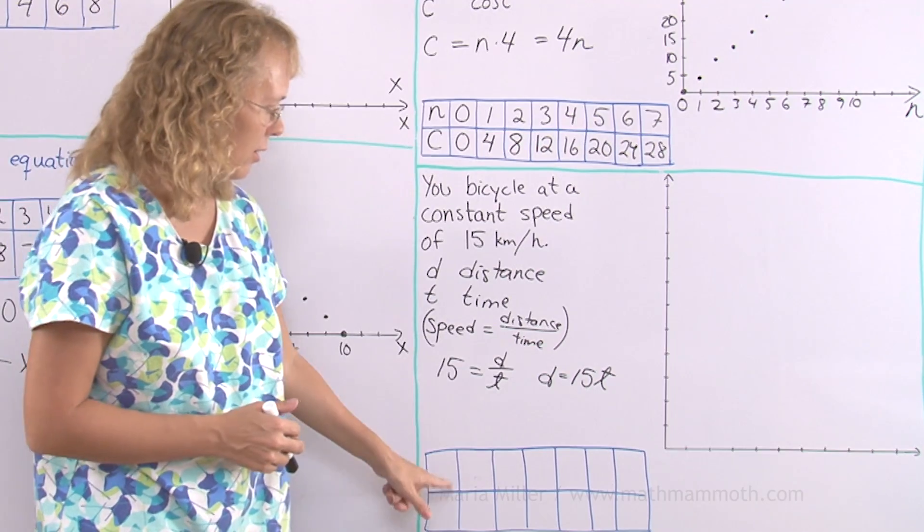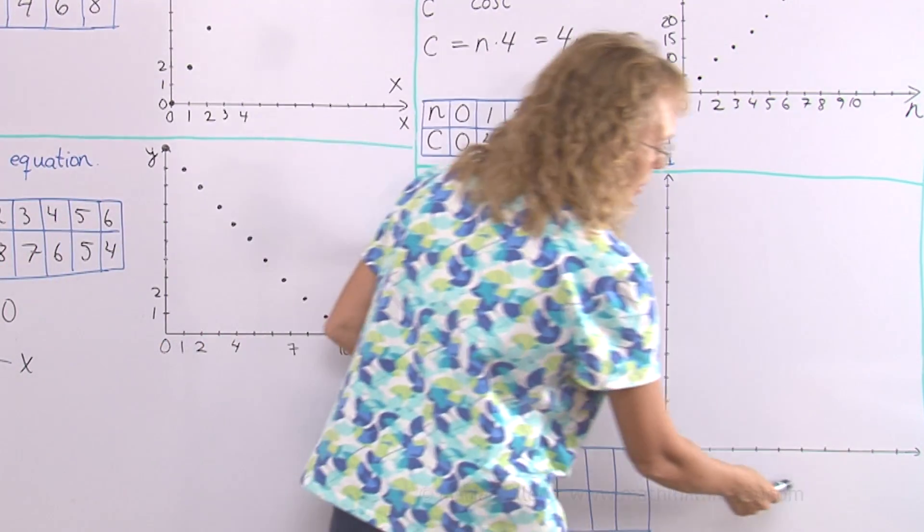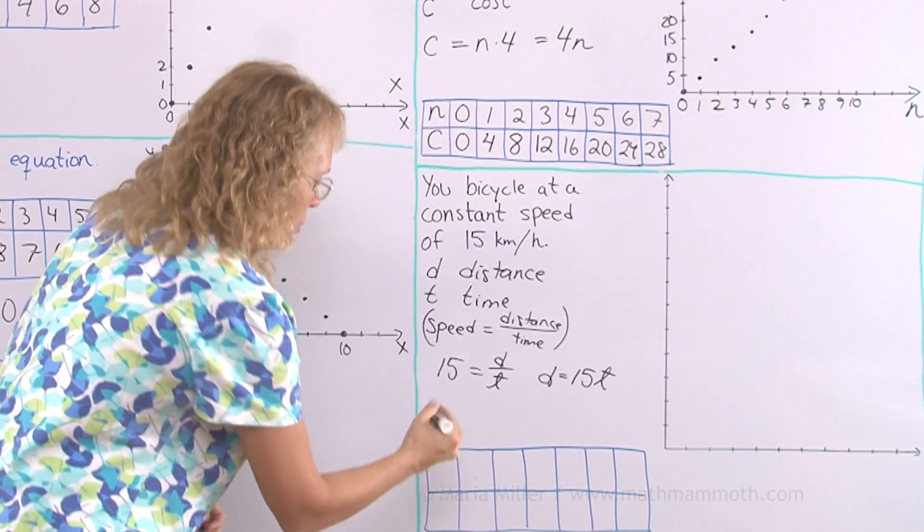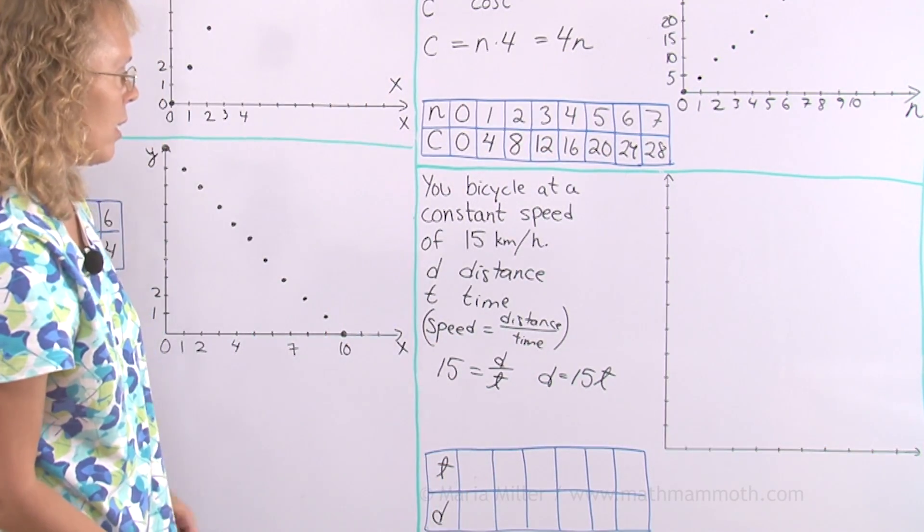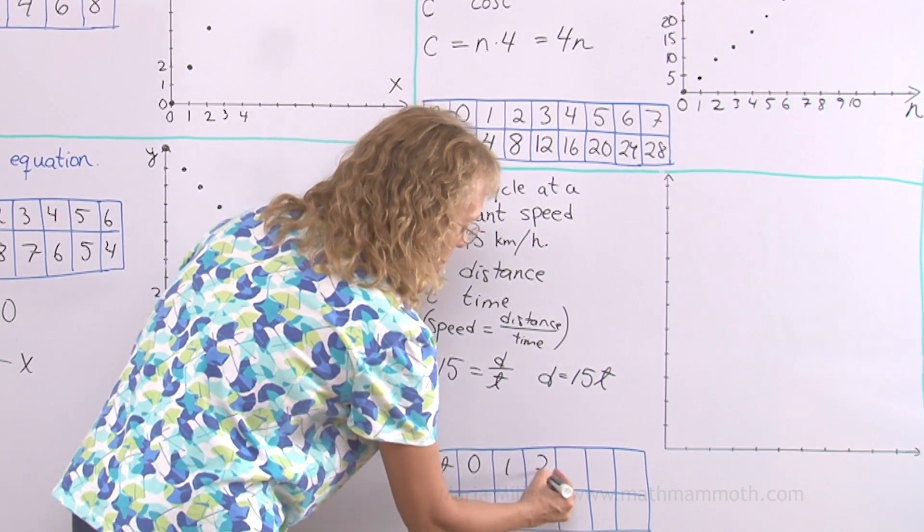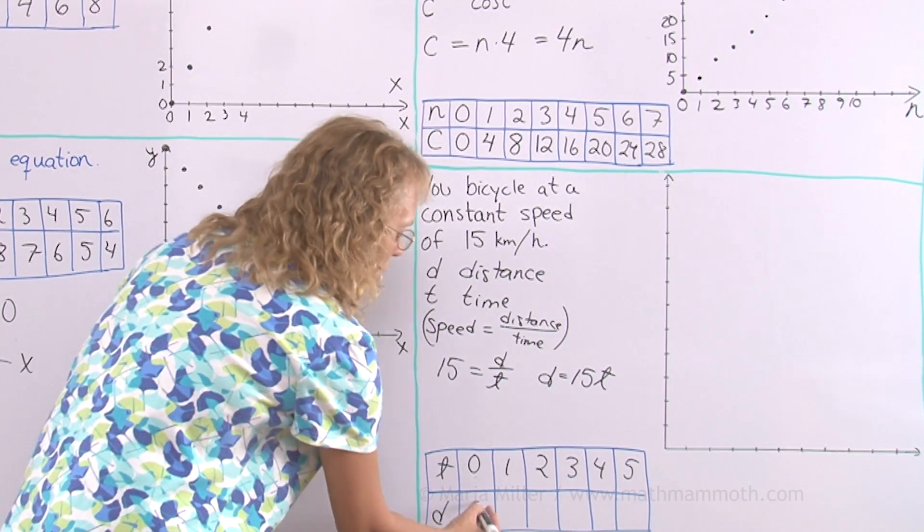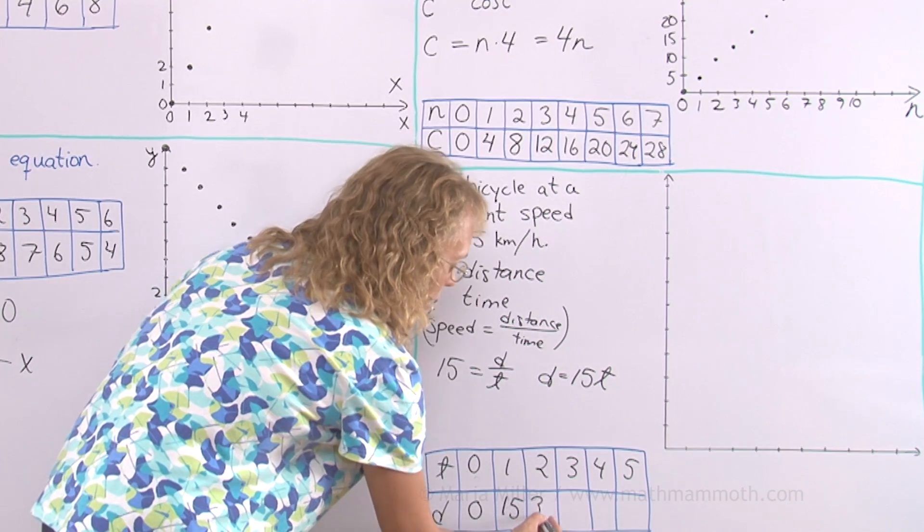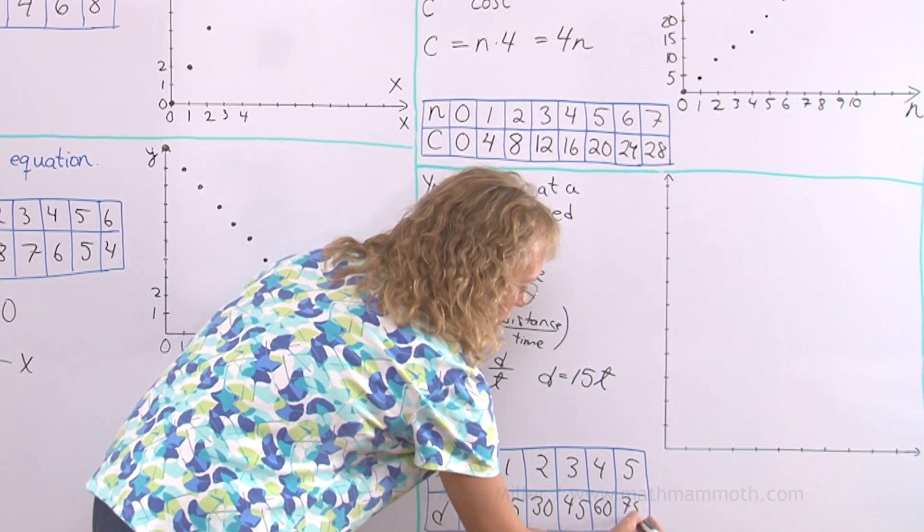And now here in our table we have distance and time. It is customary that we put time here this way. So I will put it here too first. Time, distance. And then let's say we have hours. Here however many hours you bicycle. And then how far will you go? In one hour? 15, then 30, then 45, 60, 75 kilometers.